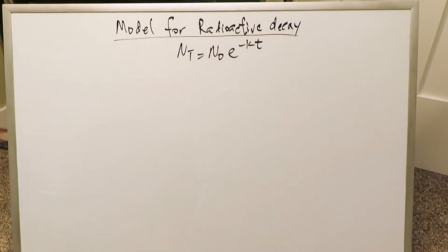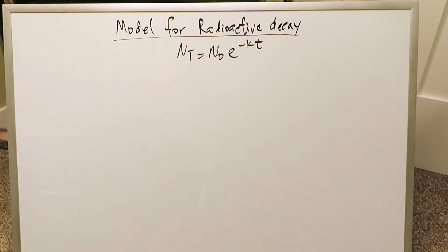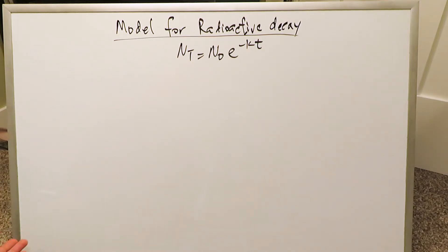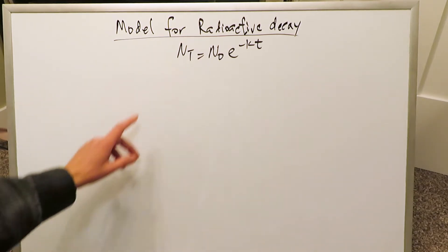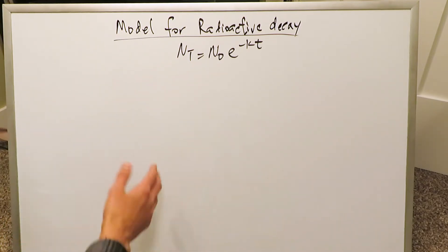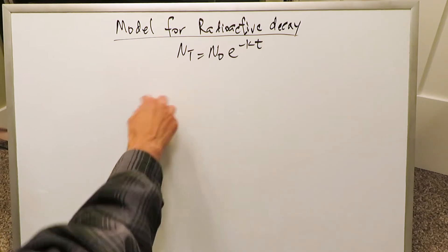Good evening everyone. I am Mr. Ish. We're looking here at a model for radioactive decay. You can think of it as synonymous to radioactive sampling or dating of historical samples — all of that utilizing changes in isotopes, the measurements of isotopes over time, to date a sample. That's what we're looking at here.